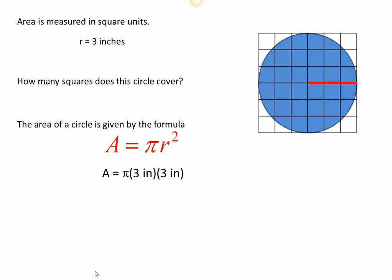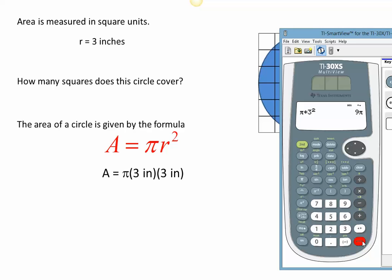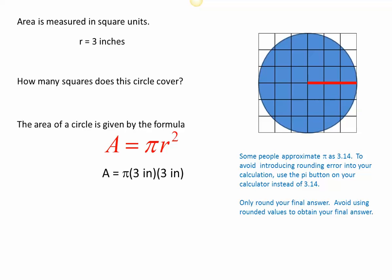On the calculator, press the pi button — the fourth button down on the left — then multiply by 3 squared using the x² key. Pi times 3² gives 9π, which is not a surprise since 3 times 3 is 9. Using the toggle key for the decimal and rounding to the nearest hundredth — the digit to the right is 4, so the 7 stays the same — the area is approximately 28.27 square inches. Remember, don't use 3.14 for pi; that introduces error. Only round at the very last step.